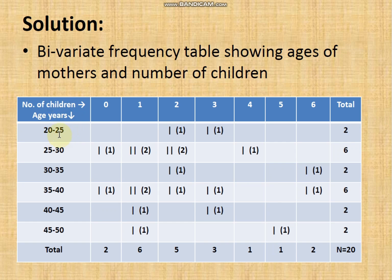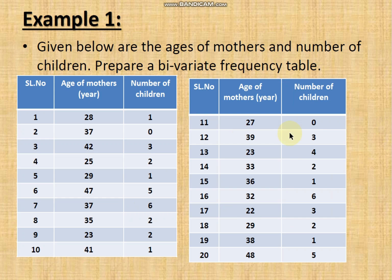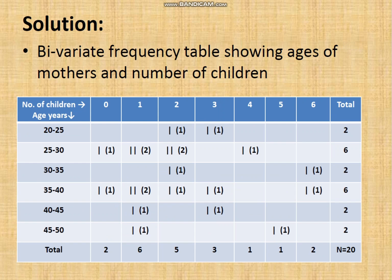Next observation: age 25 and 2 children — a tally mark is placed in the 25–30 row and the 2 column. You continue striking tally marks for each pair of age and number of children. Once done, you count the tallies in each cell. A cell with one tally has frequency 1, a cell with two tallies has frequency 2, and so on.